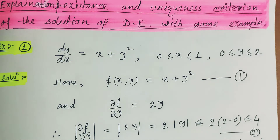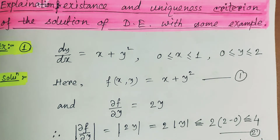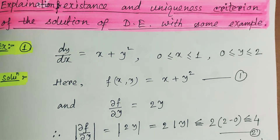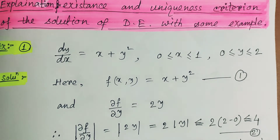To summarize the existence and uniqueness criterion: if f(x,y) is continuous and integrable then the existence criterion is satisfied, meaning the solution exists. And if the derivative of f(x,y) with respect to y exists and is continuous, then we say the solution is unique. With some examples we will now understand how to determine whether a solution exists or not and whether it is unique.